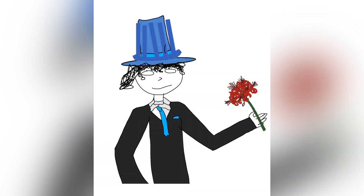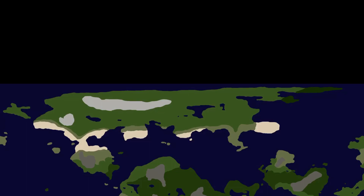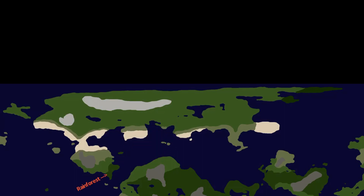There are 4 continents in Swafinia, beginning from the northernmost one to the southernmost one. The northernmost continent is Spaphera, a huge landmass about the size of Africa. Spaphera is actually quite the outlier in Swafinia, having only some parts of its landmass reach the equator, and thus only having one moderately sized rainforest at its southern peninsula.